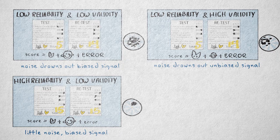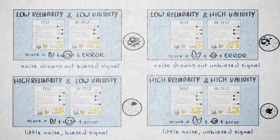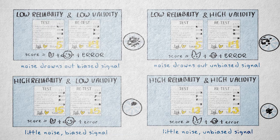Best case scenario is high reliability and, of course, high validity. A small amount of random error and systematic error. The observed score is mainly determined by the true score. We're measuring the right construct with great precision.